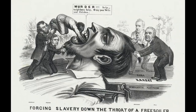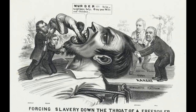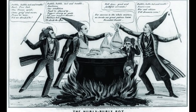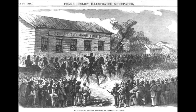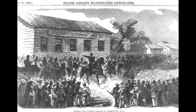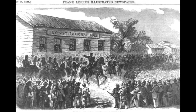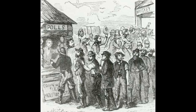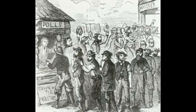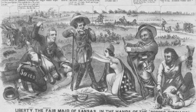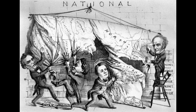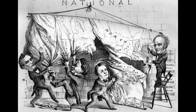Northerners felt betrayed by the passage of the Kansas-Nebraska Act, because it abandoned the agreement made through the Missouri Compromise 34 years earlier. Voters in the new territories could vote to allow slavery in land that had long prohibited slavery and ought to be free. Consequently, many Northerners gave up on ever compromising with the slave South again.